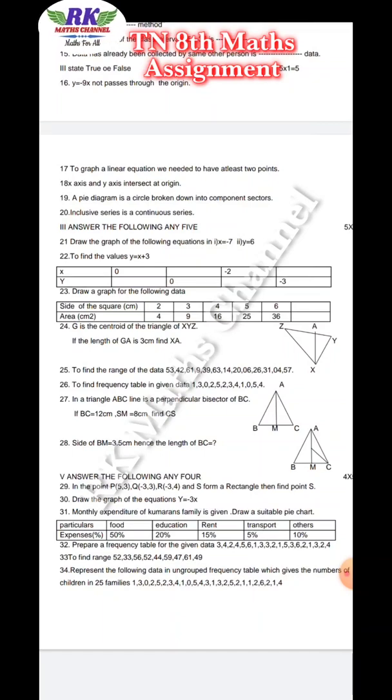To find the range of the data, we will draw the range. Range is the biggest number and smallest number. To find the frequency table in the given data. This is the perpendicular bisector of BC. BC is 12 cm, SM is 8 cm, CS is N.